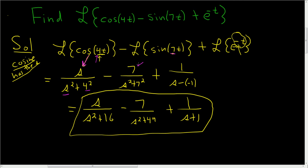Sine has the number. So, and then s squared plus 7 squared. And then here, the formula for this one, I'll write it down.